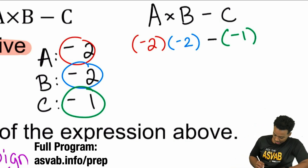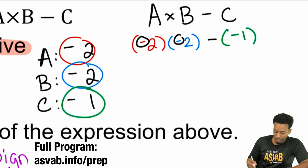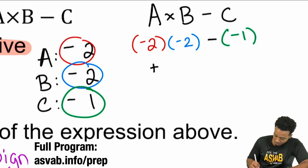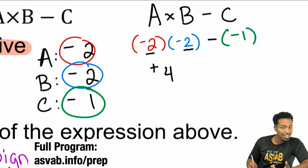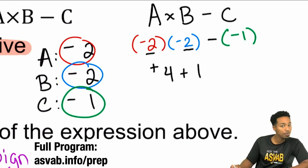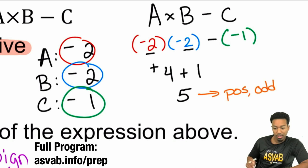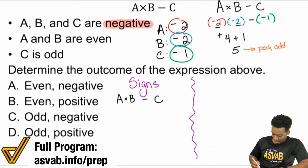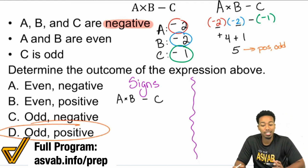So with that, let's take care of business. We have negative two times negative two — that's going to be a positive, because negative times a negative is positive. Two times two is four. And then here we have minus a negative — subtracting a negative is the same as adding a positive. We have four plus one and that is five. What we know about this is that this is positive and odd. There is our answer: positive, odd. Boom. E. There's our answer. That's proof by example — one way that you can do it.